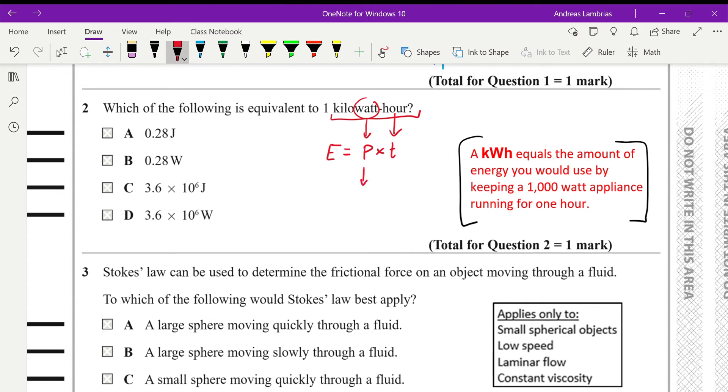Therefore if it's one kilowatt hour that means the power is 1000 watts times one hour. But in this formula the time always has to be given in seconds, so I will convert the hour into seconds by multiplying 60 to convert it to minutes and another 60 to convert it to seconds.